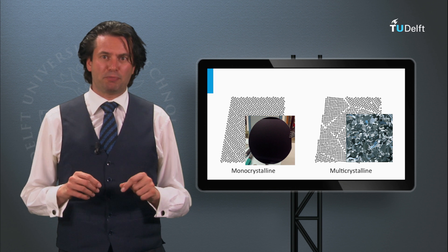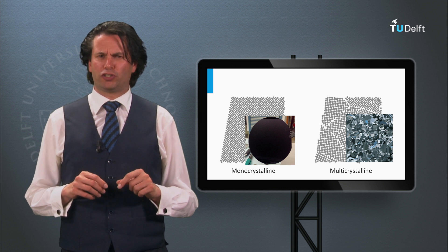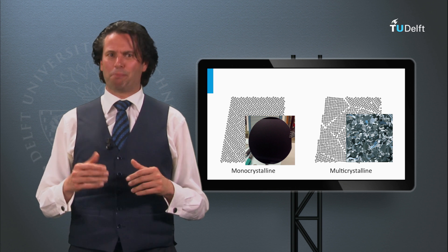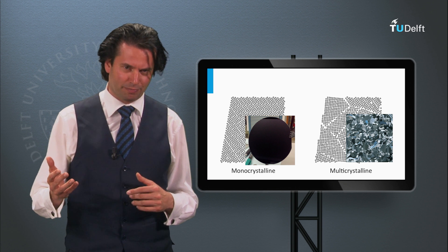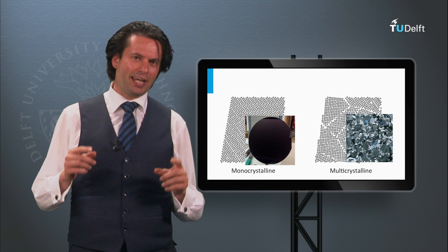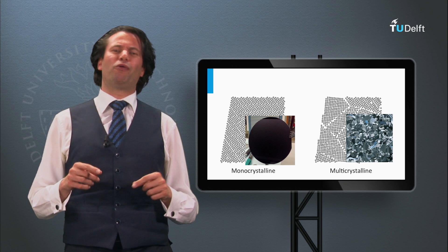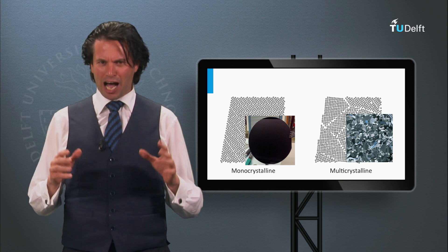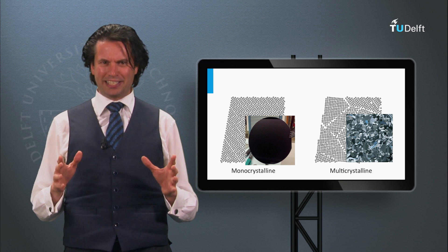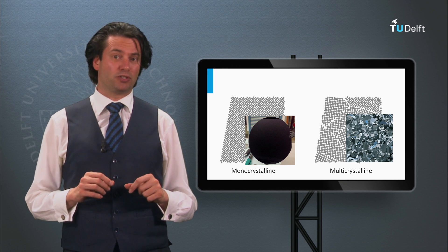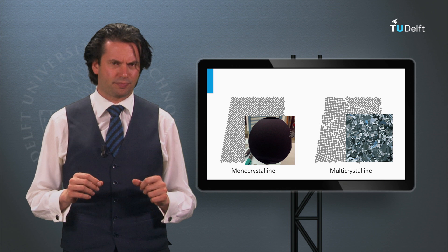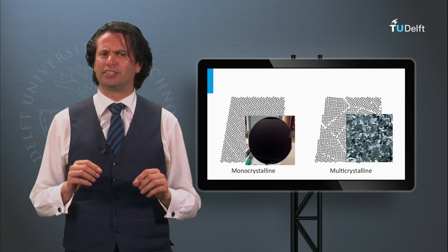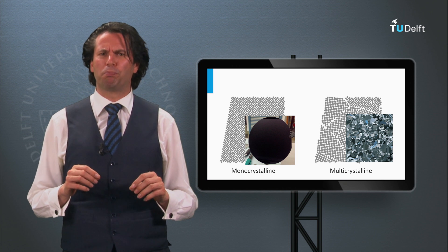We have various types of silicon wafers, such as monocrystalline silicon and polycrystalline silicon. In this block I will give an answer to the question: how do we make these various types of silicon, and how can we make the silicon material pure?